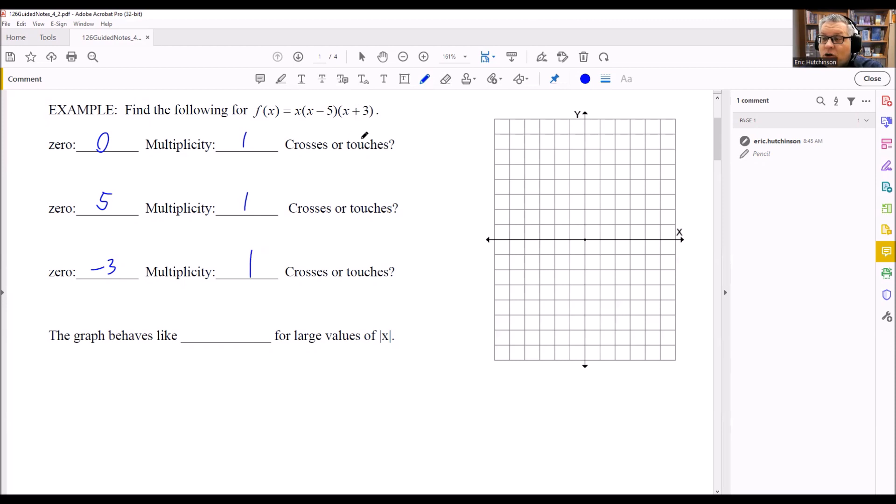We have to determine whether it crosses or touches. So if the multiplicity is odd, it's going to cross. And if the multiplicity is even, it's going to touch. So since all of these are odd numbers, that means that each of these, it's going to cross.